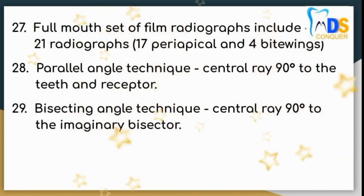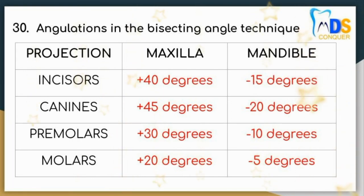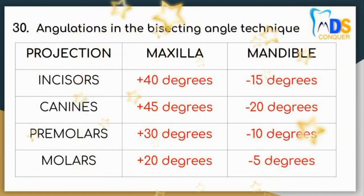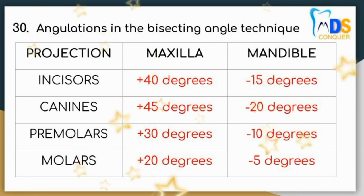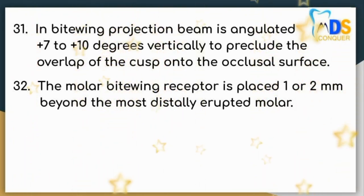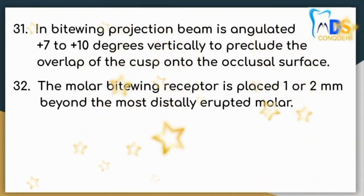Number 28: In parallel angle technique, the central ray is at 90 degrees to the teeth and receptor. Whereas in bisecting angle technique, the central ray is 90 degrees to the imaginary bisector. Point number 30: Angulations in the bisecting angle technique — maxillary incisors: +40°, mandibular incisors: -15°; maxillary canines: +45°, mandibular canines: -20°; maxillary premolars: +30°, mandibular premolars: -10°; maxillary molars: +20°, mandibular molars: -5°. Point number 31: In bitewing projection, beam is angulated +7 to +10 degrees vertically to preclude overlap of the cusp onto the occlusal surface. Point number 32: The molar bitewing receptor is placed 1 or 2 mm beyond the most distally erupted molar.